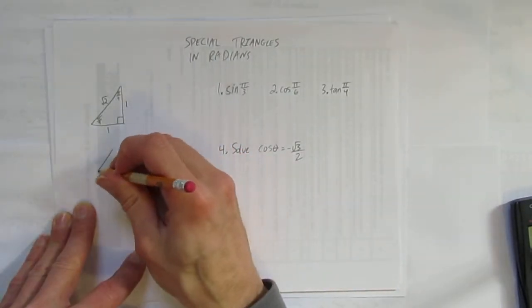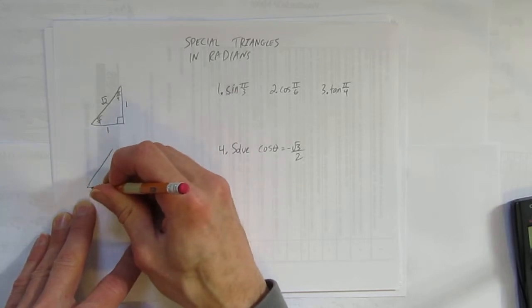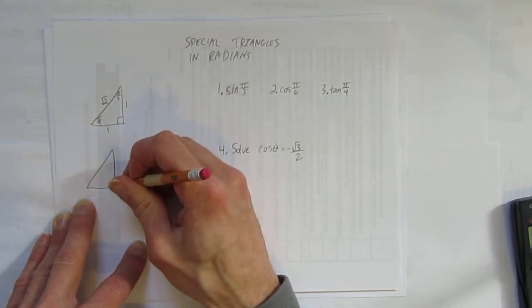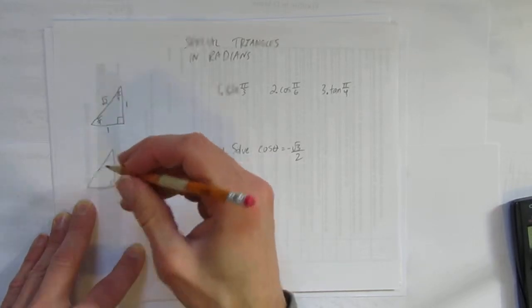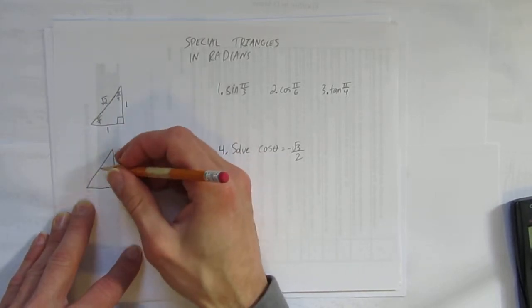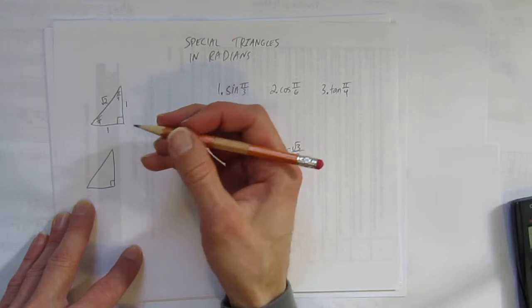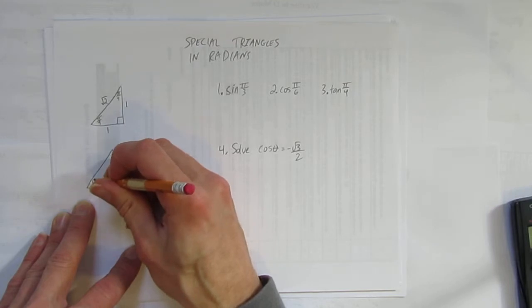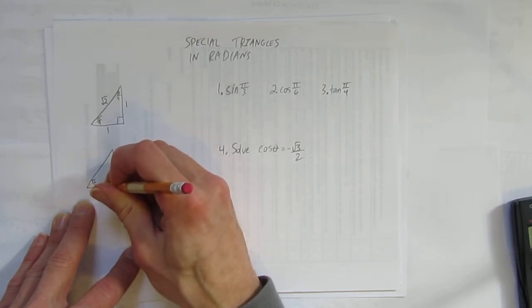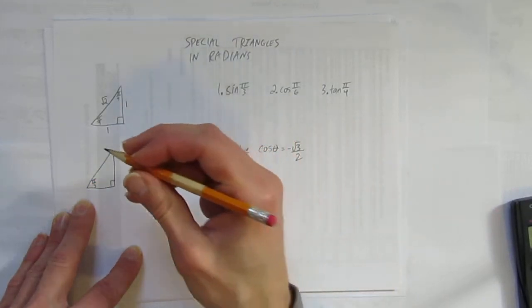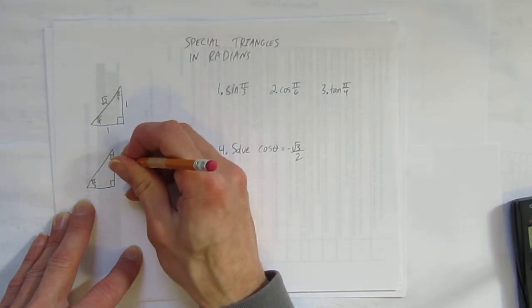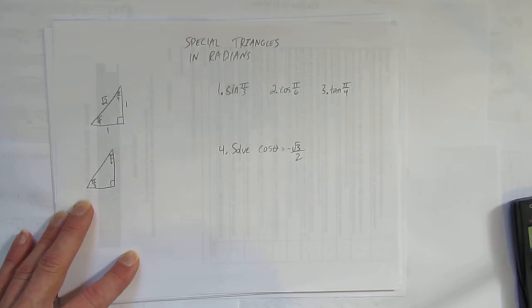The other special triangle has 30 and 60 as its two angles, but now we write those in radians. Pi is 180, so to get 60 you divide 180 by 3 — that's why 60 degrees is pi over 3. And 30 degrees is pi over 6 for the same reason.